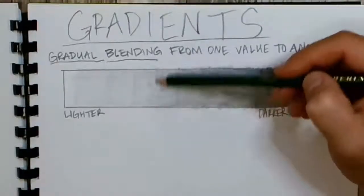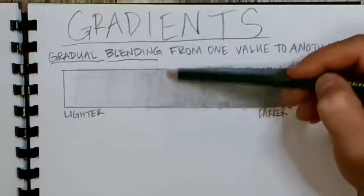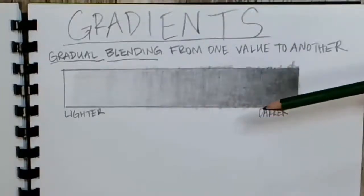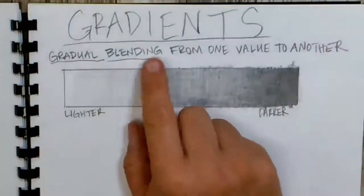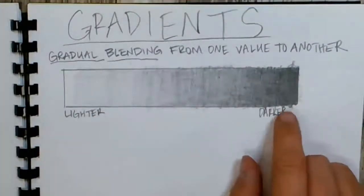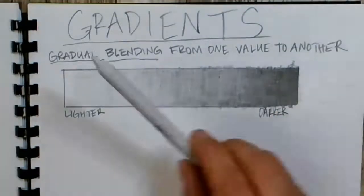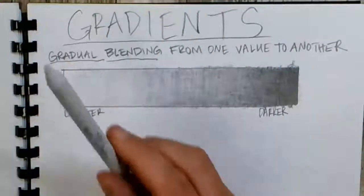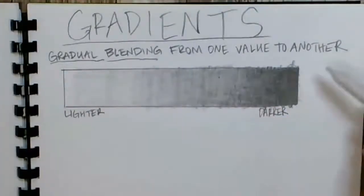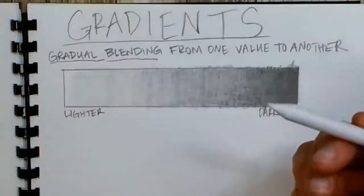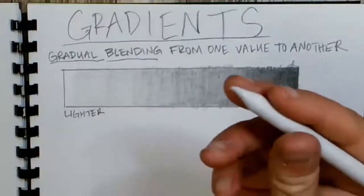Some teachers have their students do this with just one pencil. That's really hard. So I'm giving you kind of an easier way. So once you've got, like I've got five or six layers here, that's when you can start using your blending stump. Now, here's the trick with the blending stump. You don't want to start over here in the darker because then your graphite is all on your blending stump.